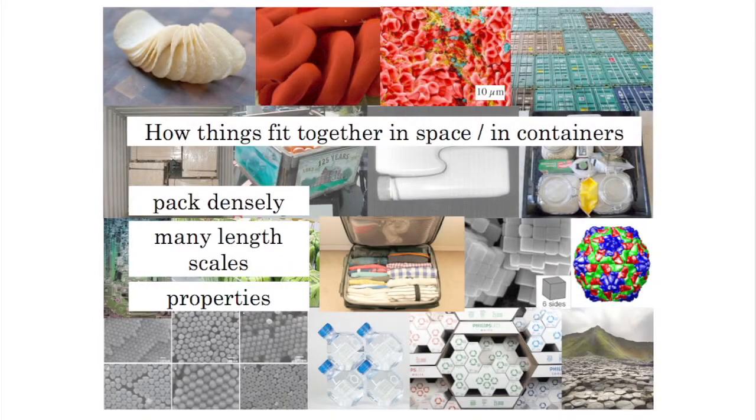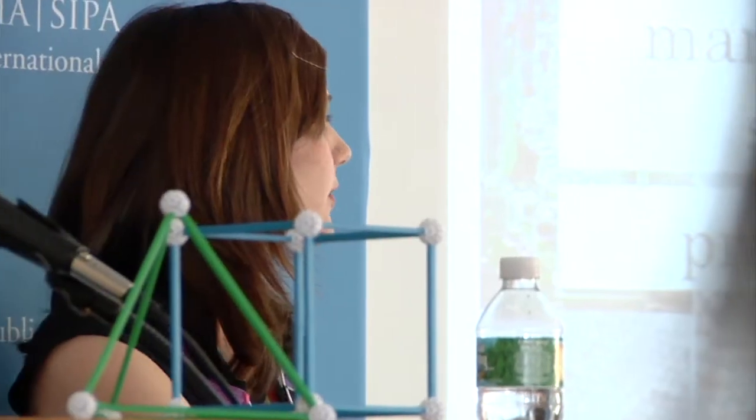The other important thing is that packing — these packing properties, how things fit together in space — is related to the properties of your system. For example, if you look at these nanomaterials here, we have objects that pack together in a certain arrangement, and this arrangement has certain properties. Different packing arrangements might mean that a material can conduct electricity versus not conducting, or can let light go through versus not letting light go through.